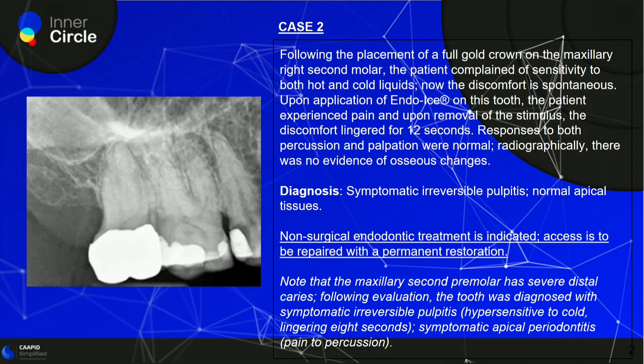Non-surgical endodontic treatment is indicated; access is to be repaired with a permanent restoration. Because it is an irreversible pulpitis, we do a root canal treatment and can go through the existing restoration without removing the crown, repairing the access with a permanent restoration. Note that the maxillary second premolar in this case has severe distal caries — it was diagnosed with symptomatic irreversible pulpitis (hypersensitive to cold, lingering eight seconds) and symptomatic apical periodontitis due to pain on percussion.